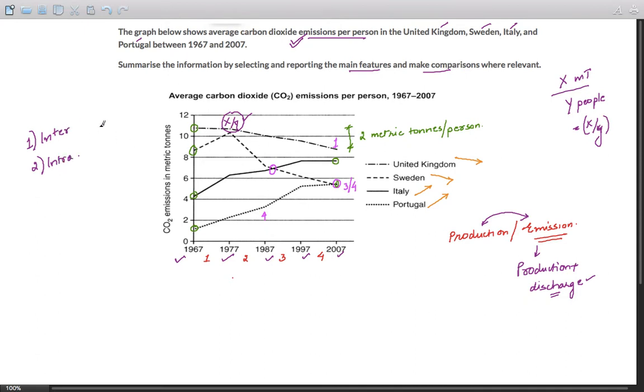So what we can do is you can look at United Kingdom alone, Sweden alone, only at Italy or only at Portugal. That's one picture, that's intra. So what you can see is United Kingdom fell, Sweden fell in general, Italy increased, Portugal increased. So these are the trends.